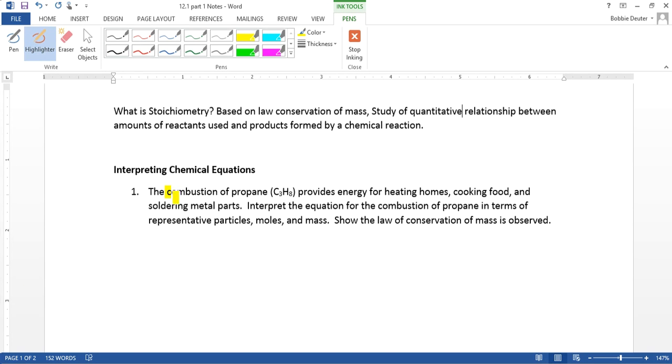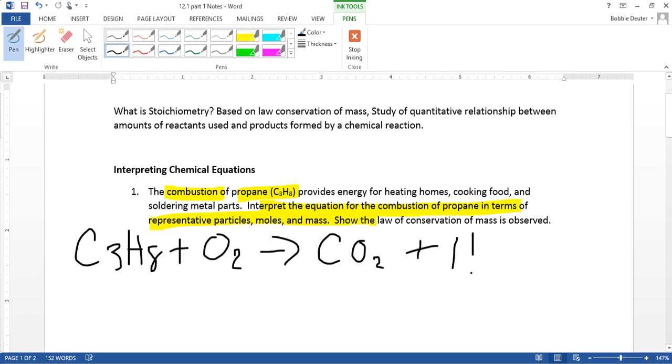So let's see what we have here. It tells us we have a combustion reaction, that's kind of important, between propane, which is used to heat in our homes. So we need to interpret that in terms of representative particles, moles, and following the law of conservation. We're only given one chemical. That's okay though, because we know it's a combustion reaction. So we know that propane, C3H8, will react with - what do you have to have to have a combustion reaction? Oh yes, oxygen gas - to produce the only two byproducts we know from chapter 10, which will be CO2 plus water.